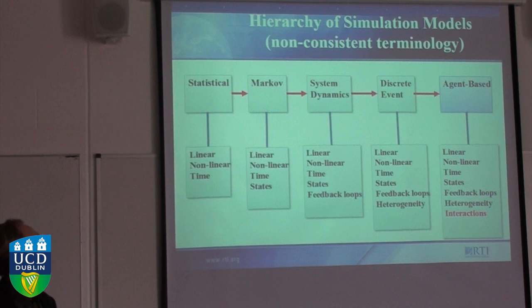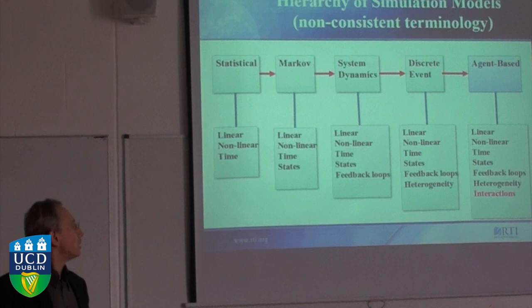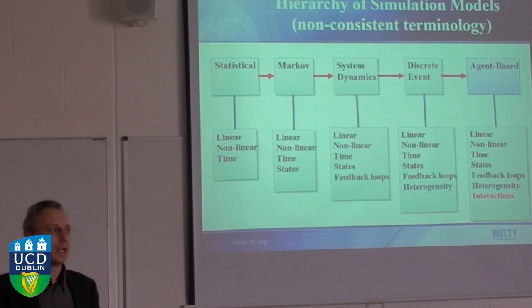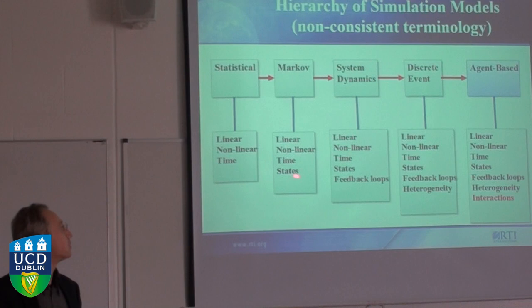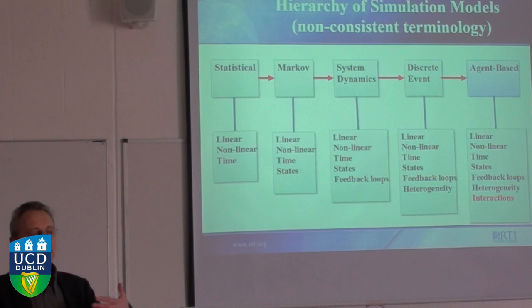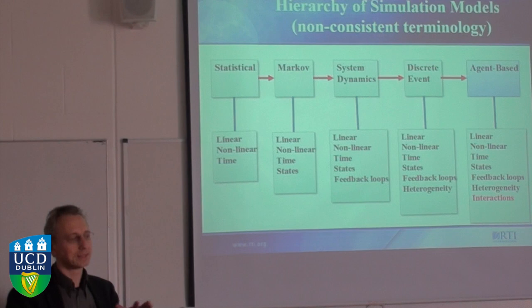One thing statistical models cannot handle easily is movement between different states. If you have an individual population that could be in different states, you can view it as a multinomial distribution. But a key component of dynamic models is that individuals keep moving between different states. To account for transitions between states we can use Markov models, though they have limitations because they don't account for history — though you can adapt them to somehow include history, making them bigger.